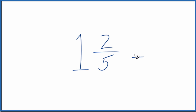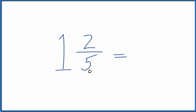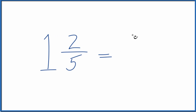To convert to an improper fraction, we take the whole number times the denominator: 1 times 5, that's 5, plus the numerator. So 1 times 5 is 5, plus 2 is 7. And then we bring the denominator across.